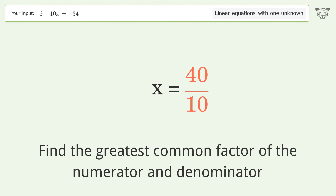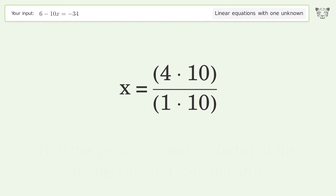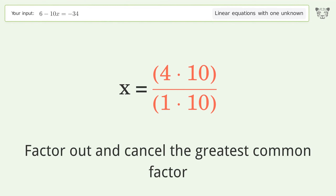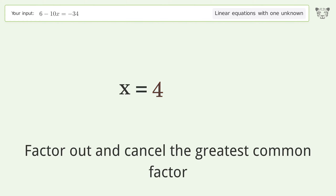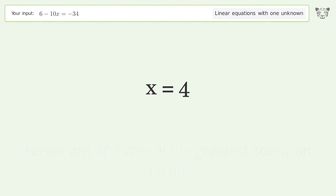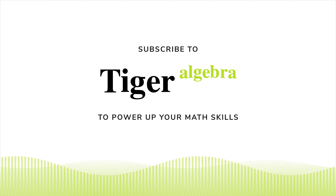Cancel out the negatives. Find the greatest common factor of the numerator and denominator. Factor out and cancel the greatest common factor. And so the final result is x equals 4.